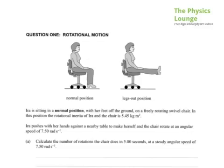Ira is sitting in a normal position, feet off the ground on a freely rotating swivel chair. In this position the rotational inertia of Ira and the chair is 5.45 kgm squared. Ira pushes with the hands against the nearby table to make herself and the chair rotate at an angular speed of 7.50 radians per second.